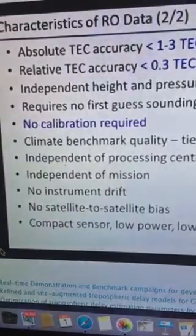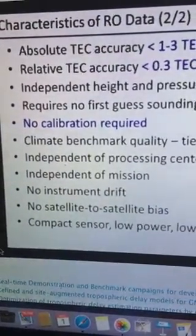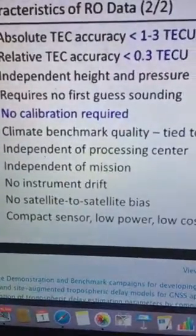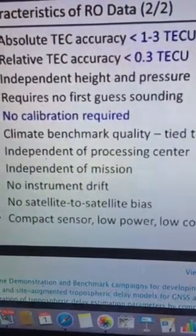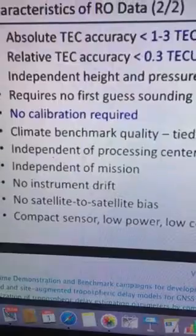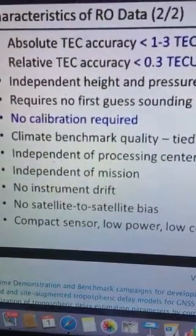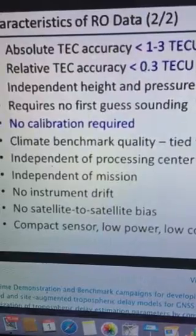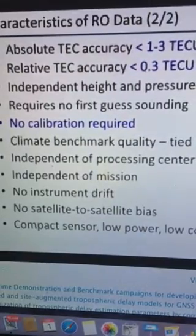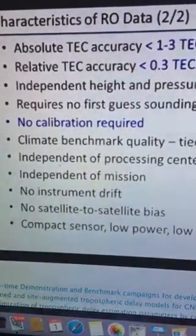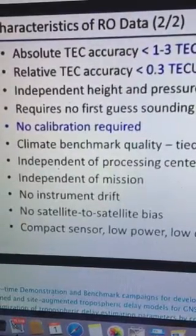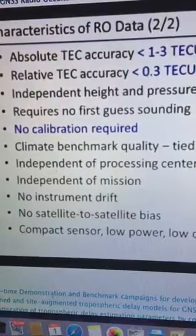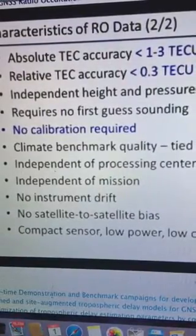We'll see later that some other atmospheric sounders have biases, for example, and they actually use radio occultation data these days to calibrate some of those techniques. It's also becoming a climate benchmark. There's a tie to SI standards. The time series of radio occultation data from space is getting to be about 20 years long now. It's not continuous, but the first satellite doing this was GPSMET, and that started providing data in 1996.